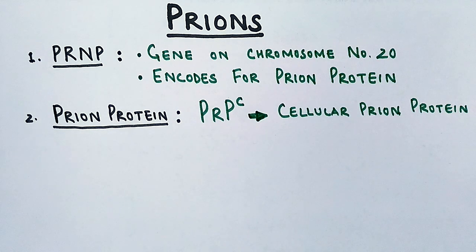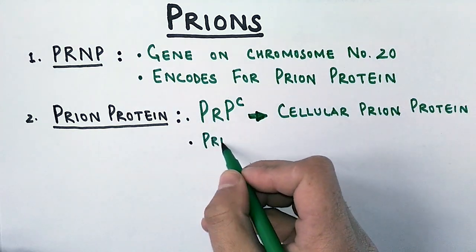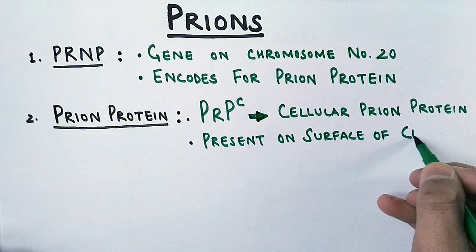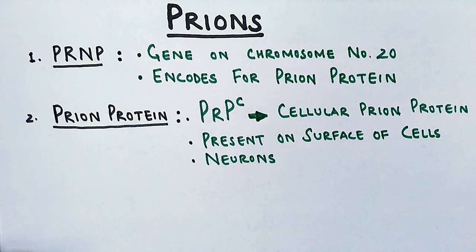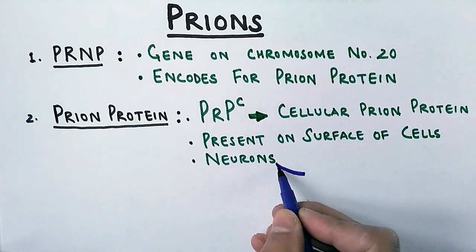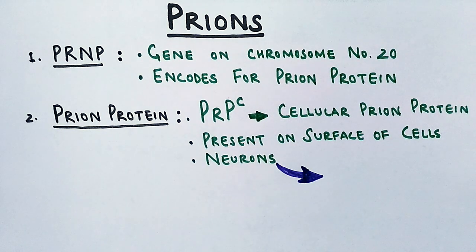So this PrP^C protein or prion protein is present on surface of cells, and most probably it's present on neurons that are present generally in our brain, and these neurons that have got these prion proteins are used during synapses.